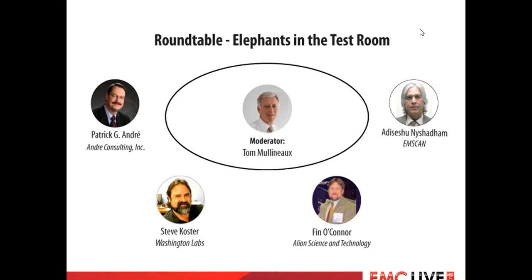We've run out of time for topic number one, so let's move on to elephant number two: underperforming EMC chambers. When calibrating a test field to 6 GHz for commercial RF immunity testing, many test houses are finding their forced-positioning antenna at one corner of the room. All standard 3-metre semi-anechoic test chambers are cuboids with flat walls, ceiling, and floor, clad in RREC absorber. Is a flat absorber-lined hot wall truly the only possibility?